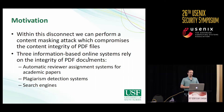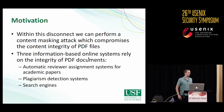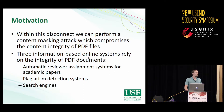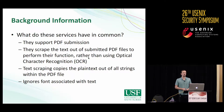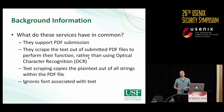We can compromise the content integrity of PDF files. Three important systems rely on the integrity of these documents: automatic reviewer assignment systems for academic papers, plagiarism detection systems, and document indexing services such as search engines. These services support PDF submission, and rather than looking at the rendered content of those PDFs, they look at the underlying text — they scrape that text out and ignore the fonts associated with it.